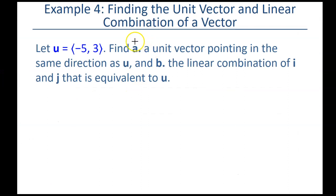All right, we got the first part here done. We got part A done. Part B says the linear combination of I and J equivalent to U. Well, the I vector is just the vector 1, 0. All right, and the J vector is the vector 0, 1. So, this is a unit vector that lies on the X axis. This is a unit vector that lies on the Y axis.